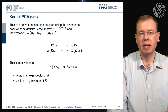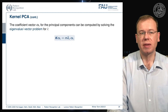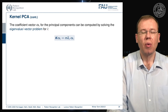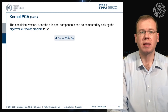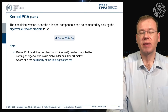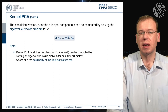If we apply the inverse of K, we arrive at the eigenvalue-eigenvector problem of the kernel matrix K, and our alphas are essentially the eigenvectors. We can now solve this to find our principal components. Observe that both kernel PCA and classical PCA can be computed by solving eigenvector-eigenvalue problems for M times M matrices, where M is only the cardinality of the training set and no longer the dimensionality of the input space — a pretty cool property.